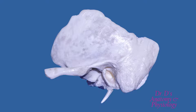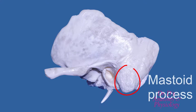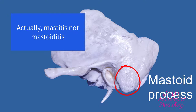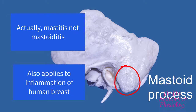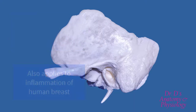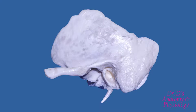Inferior to the external auditory meatus, a process of the petrous part is called the mastoid process. Mastoid means breast-like. Other words that have this stem are mastectomy, which is removal of the breasts, and mastoiditis, which is something you talk about when cows, for example, get udder infections. The anatomist looked at this process and it occurred to him that it looked like a breast.